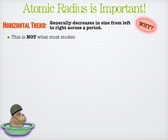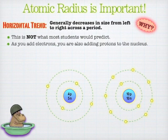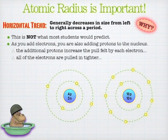This is the opposite of what most students would predict. The reason this happens has a lot to do with the protons in the nucleus. As you move left to right, you are adding more electrons — that's true. But you're also adding more protons to the nucleus, and what that does is increase the pull of the nucleus, the positive charge. And that will pull all electrons in closer to the nucleus because all electrons are being pulled by that stronger nuclear charge.